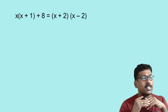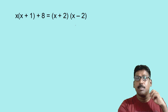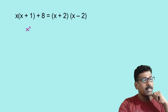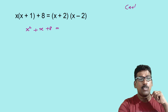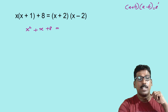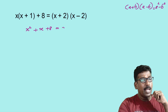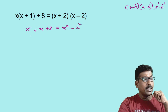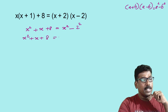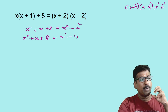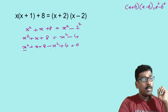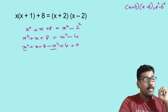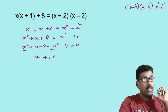Let me take one more example. x times (x plus 1) plus 8 is equal to (x plus 2) times (x minus 2). Let us simplify it. You get x squared plus x plus 8 on the left. Now (x plus 2)(x minus 2) is of the form (a plus b)(a minus b), and you know that is a squared minus b squared. So this is x squared minus 4. That is, x squared plus x plus 8 is equal to x squared minus 4. Transpose x squared minus 4 to the LHS: x squared plus x plus 8 minus x squared plus 4 equals 0. Here x squared minus x squared becomes 0. So you get x plus 12 equals 0.